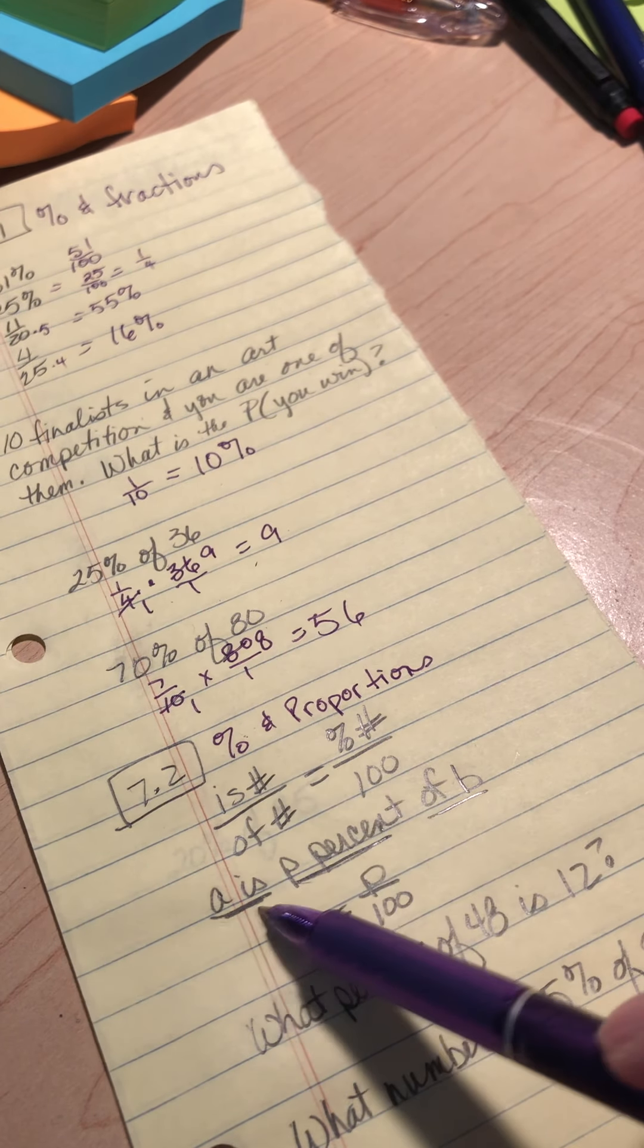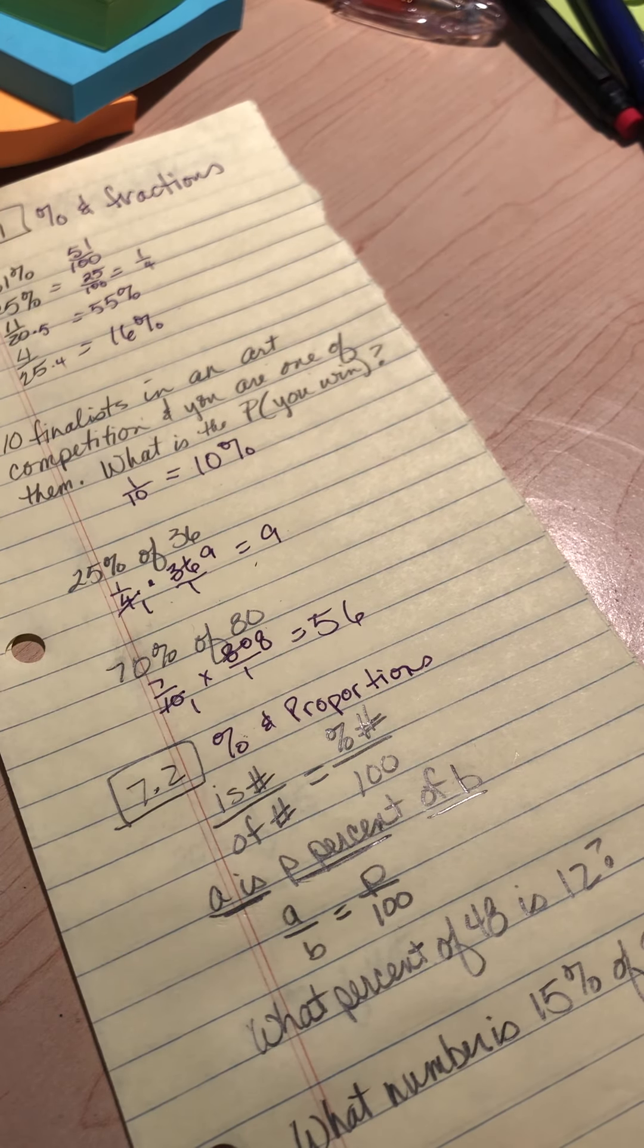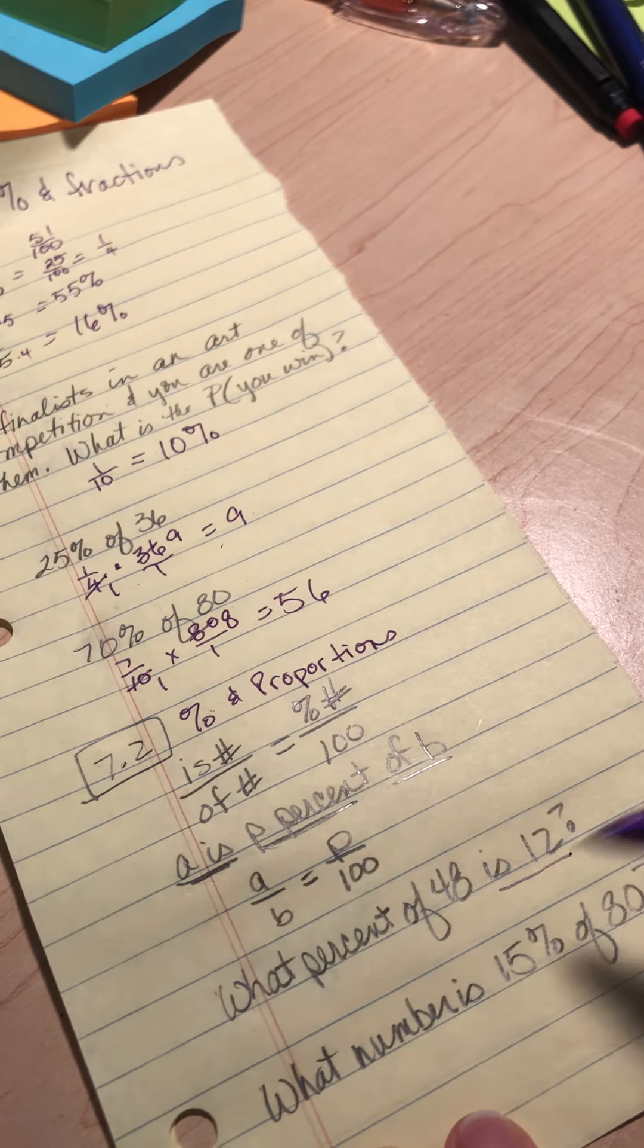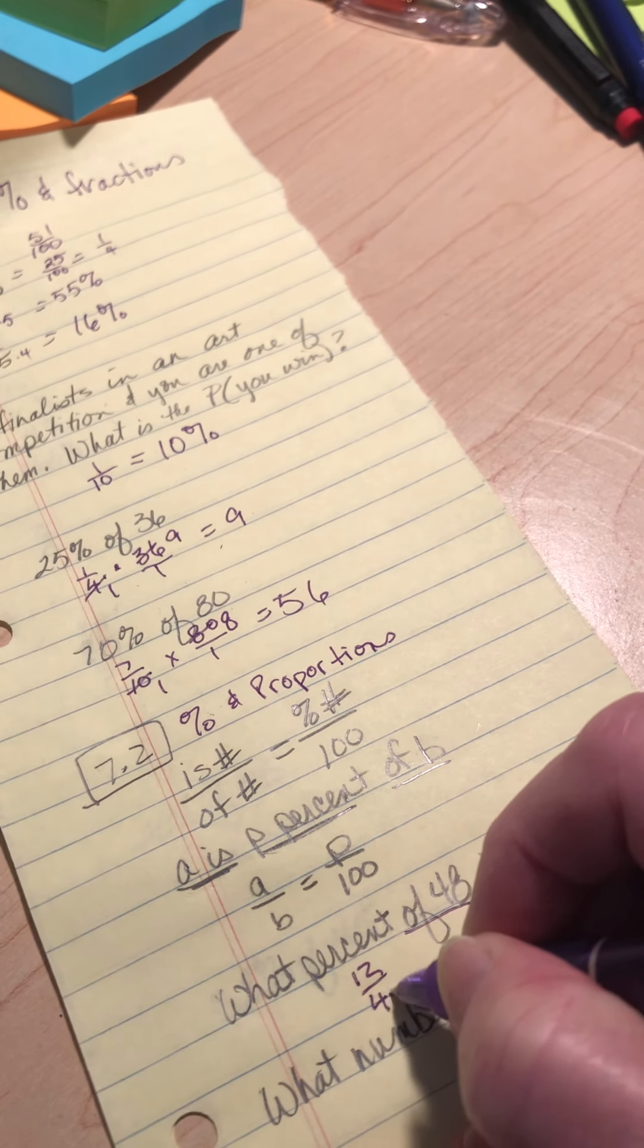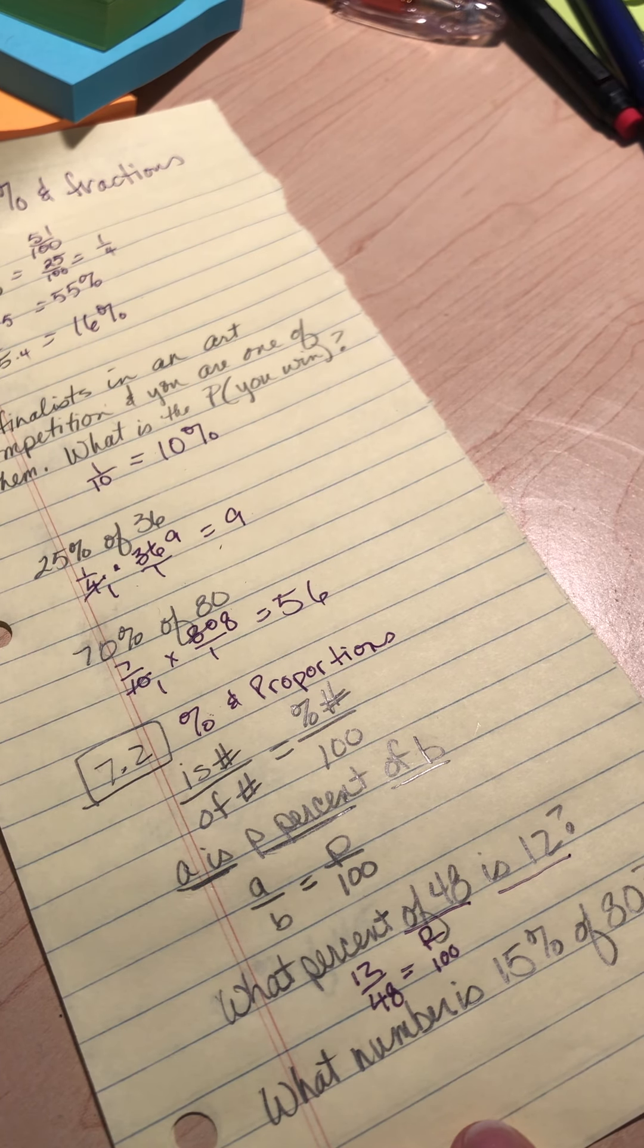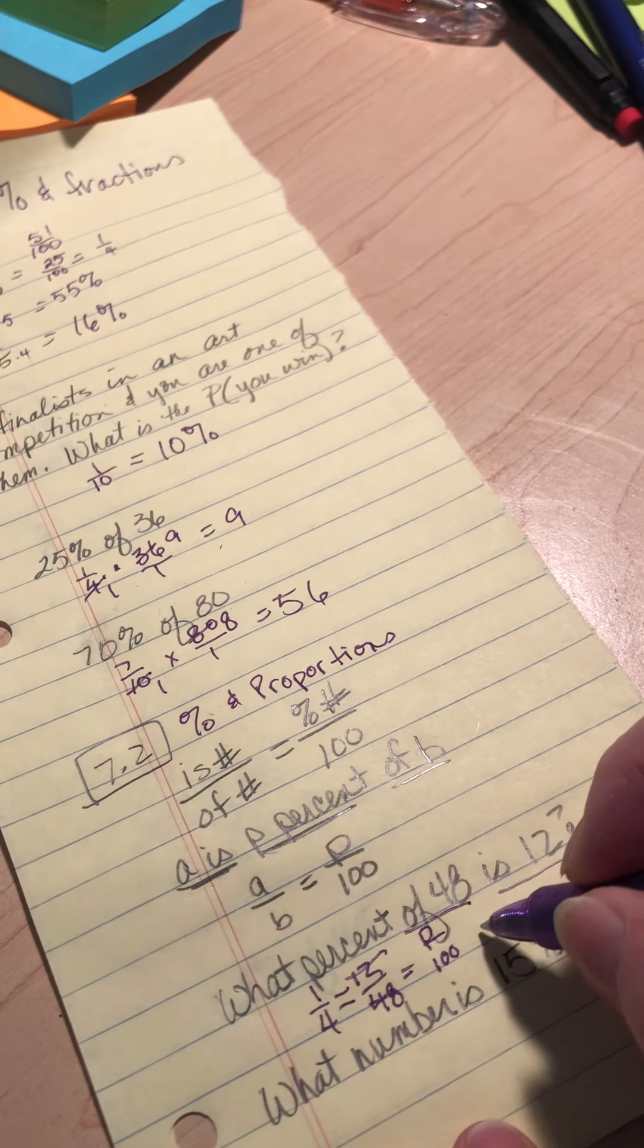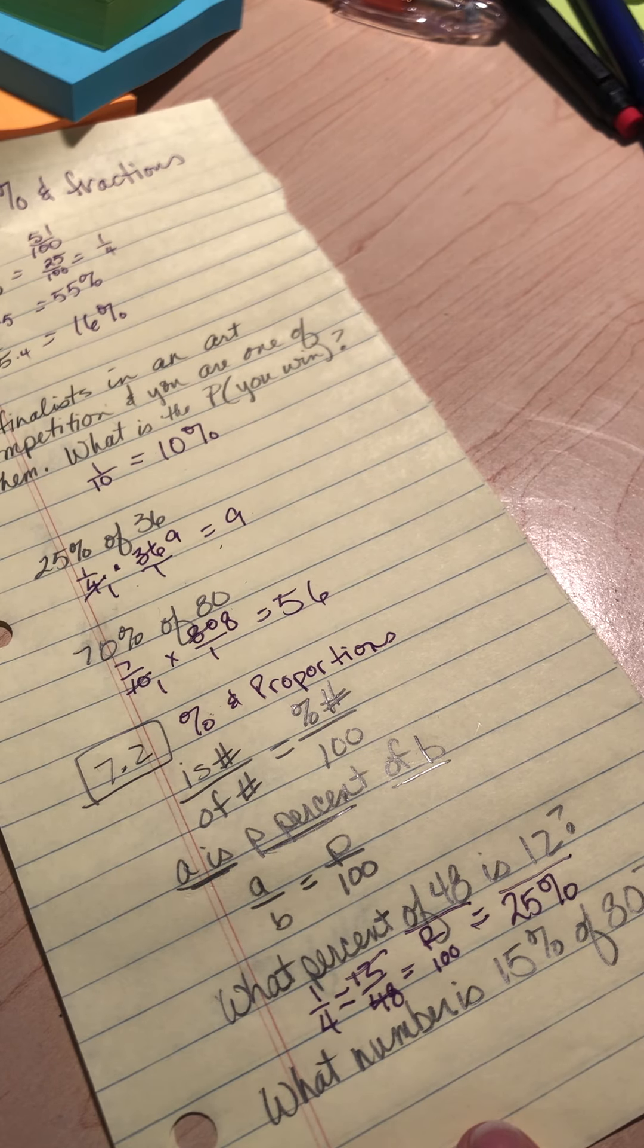So the is number goes on top. The of number goes on the bottom. Percent number over 100. So if I have what percent of 48 is 12, well, this is my is number. This is my of number. I'm trying to find P. So I've got 12 over 48 equals P over 100. Now, remember, we're using what we know about fractions. This is equal to one-fourth. And I know that one-fourth is 25%. So P is going to be 25%.